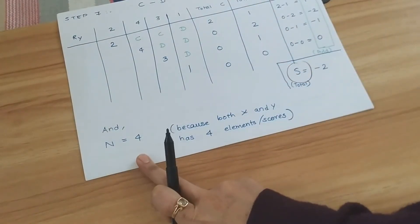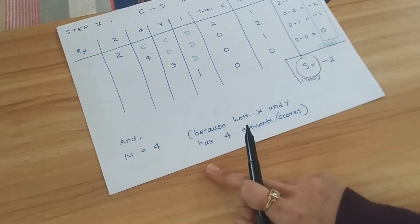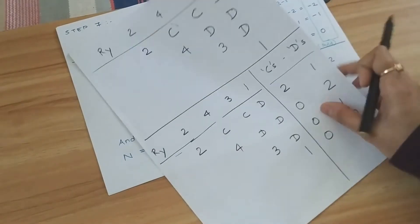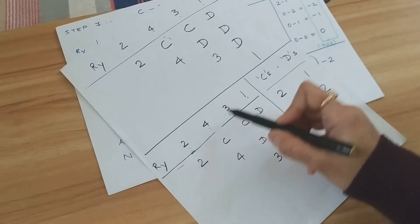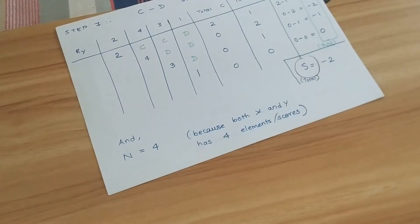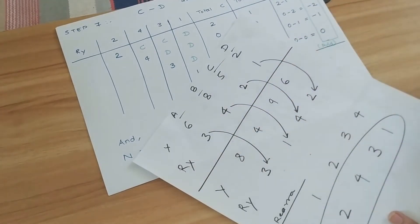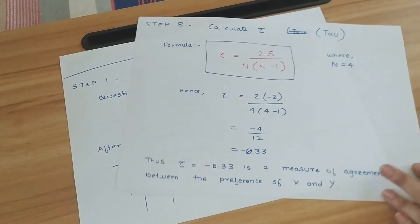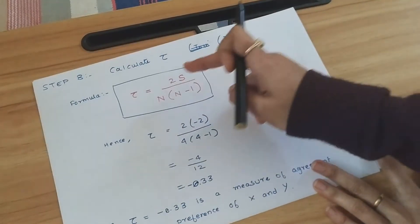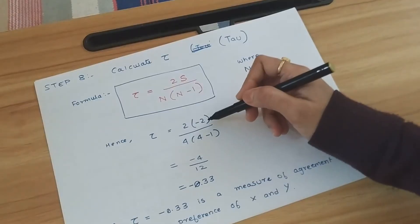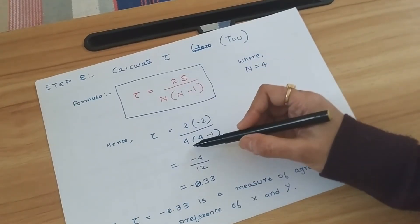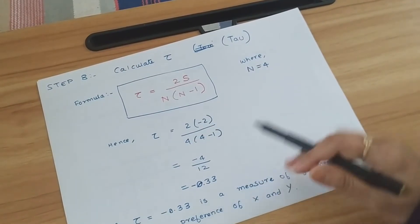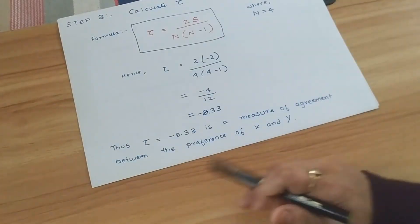We also need n for the formula. n is the number of elements — X and Y have four elements each, so n = 4. We place the values into the formula: tau = 2S / (n(n−1)). With S = −2 and n = 4, we compute the tau value.